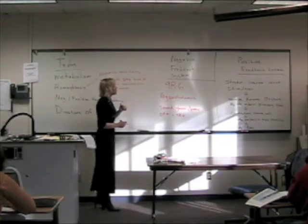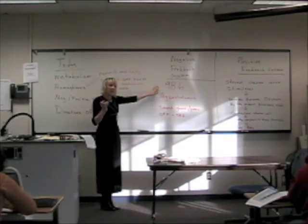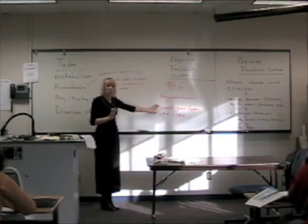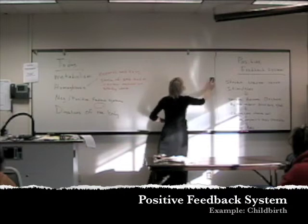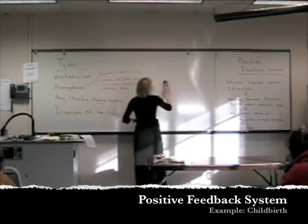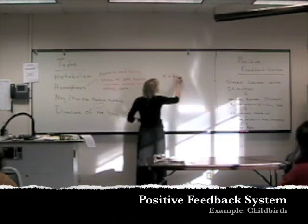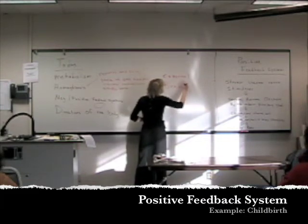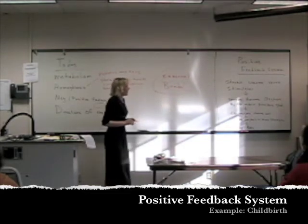A negative feedback system has a stimulus — something stimulates it, a change happens in the body, and that change keeps happening until it gets back to its normal limit. It needs something to stop it; it's not going to stop on its own. They call it an external break — something has to stop it in the body.